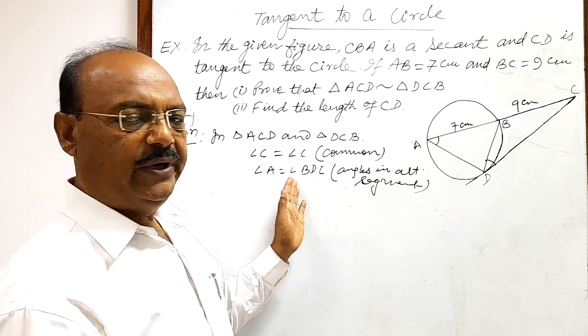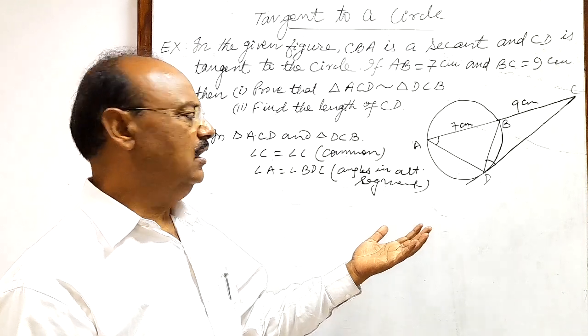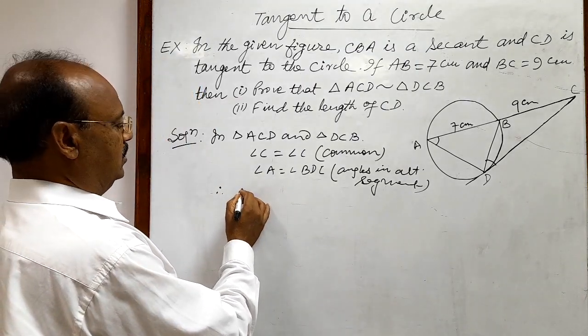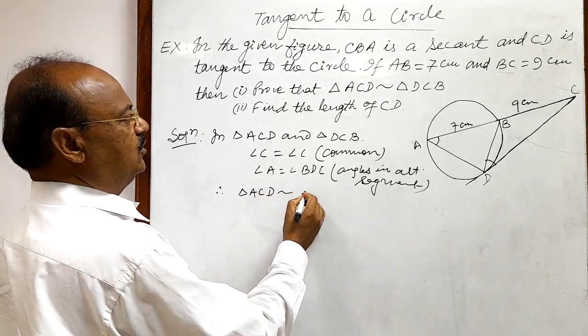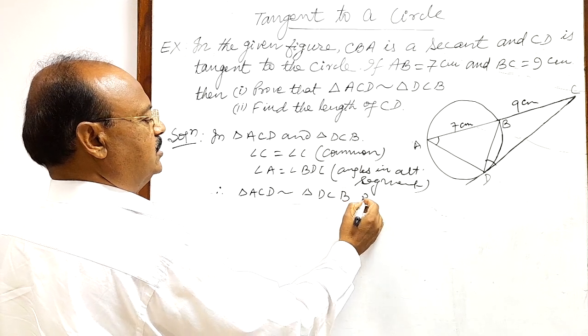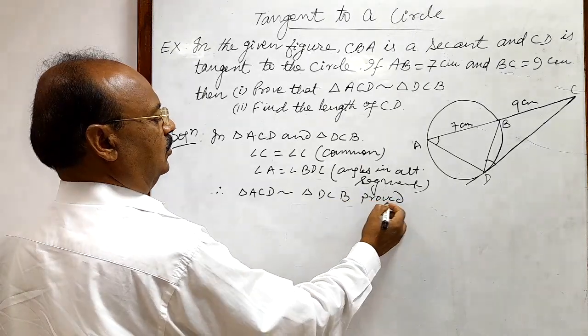So here these two angles are equal, so automatically third angle will also be equal. So here we can write that therefore triangle ACD is similar to triangle DCB. So this first part has been proved here.